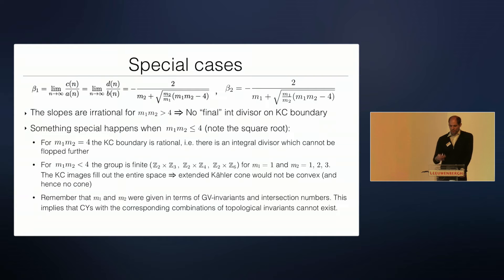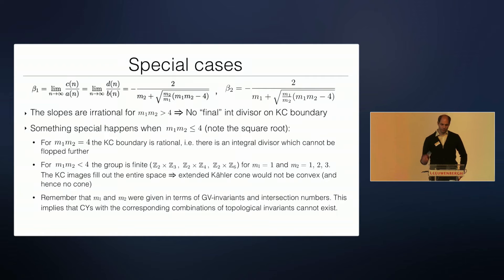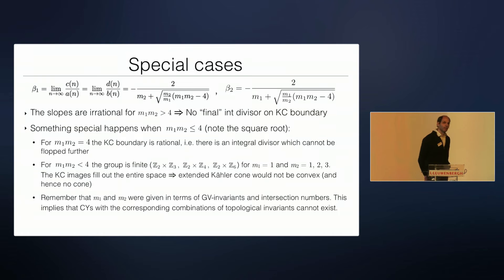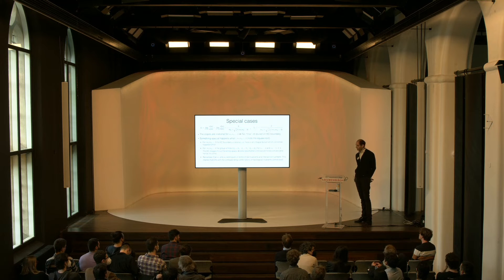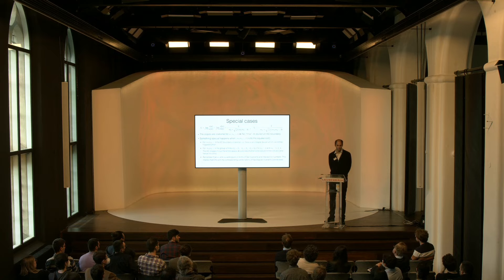So, if you have infinitely many flops you get this group, you get the boundaries of the extended Kähler cone, and typically they are irrational — so at the end of the extended Kähler cone there's no divisor sitting there. There was a question about whether I can see the field theory or gravity analog of that statement. I haven't thought about it carefully — most probably in supergravity I could work it out, but I would have to think about it.